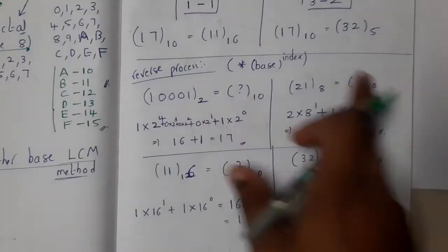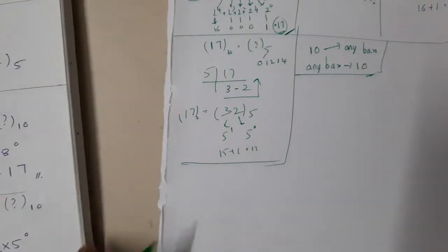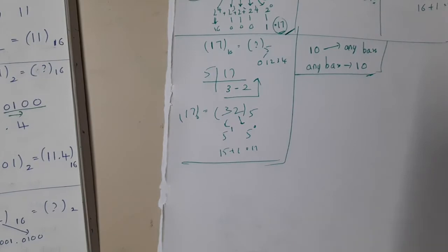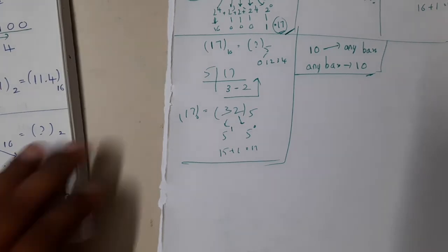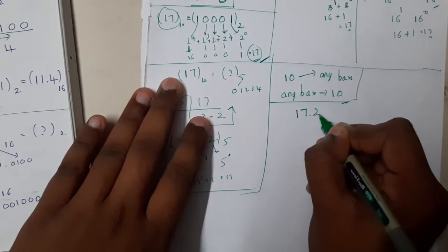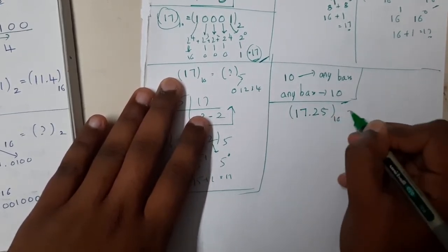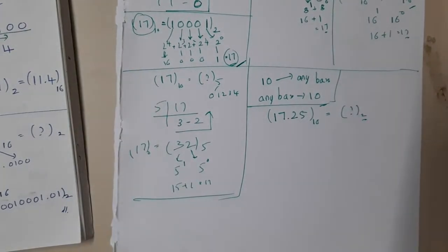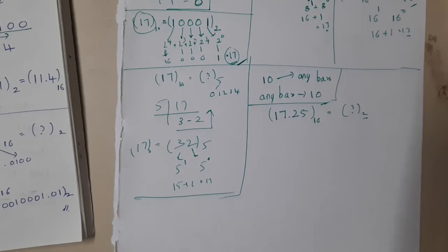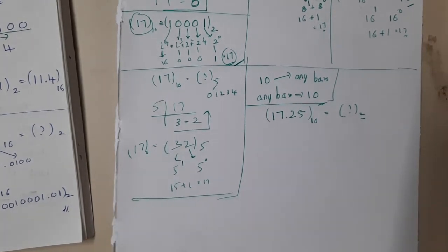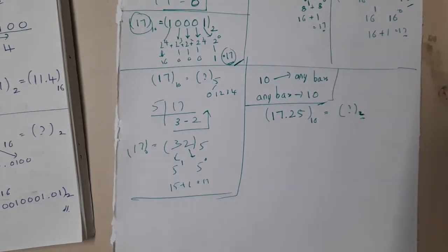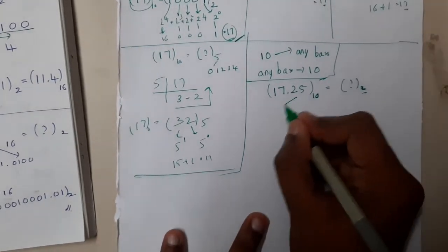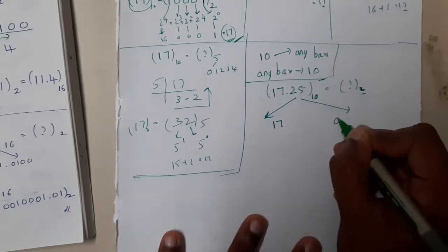In examinations, questions often involve decimal numbers like 17.25 base 10 converted to base 2. Let us learn how to handle this. The first step is to separate the integer part (17) and the fractional part (0.25), then process each part separately.